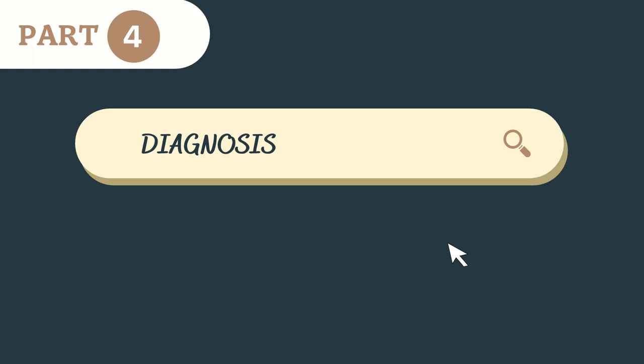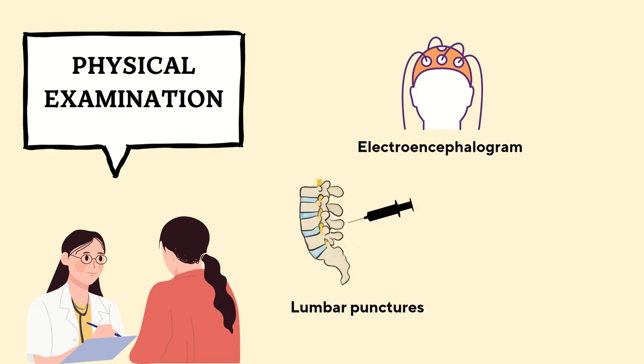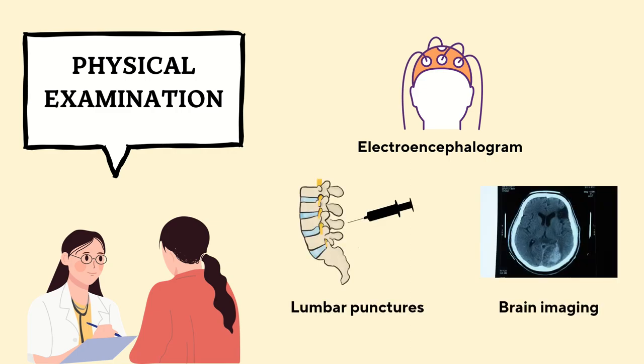Diagnosis of DID involves two phases: physical examination and psychiatric examination. The first phase, physical examination, is to determine if any physical injury is causing the DID-like symptoms. The patient undergoes several examinations such as electroencephalograms, lumbar punctures, and brain imaging. If physical health conditions are ruled out, the patient is then referred to a mental health practitioner for a diagnosis.